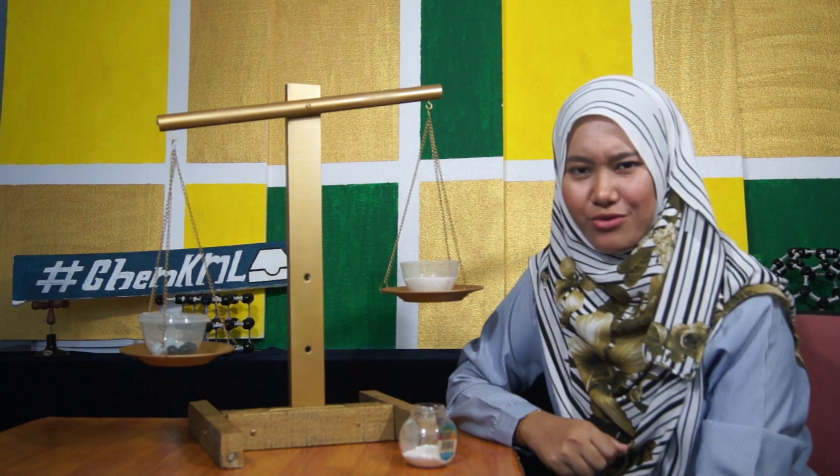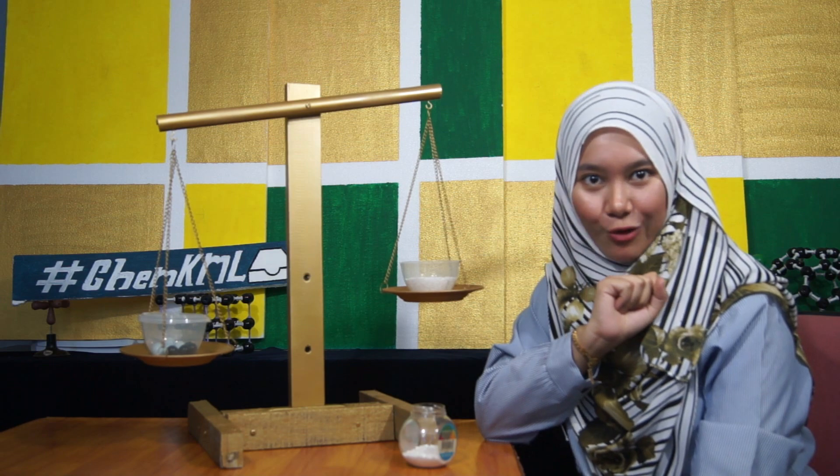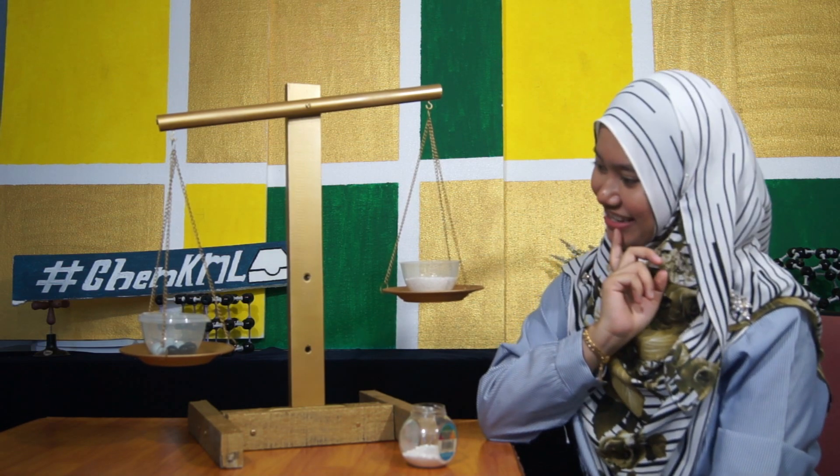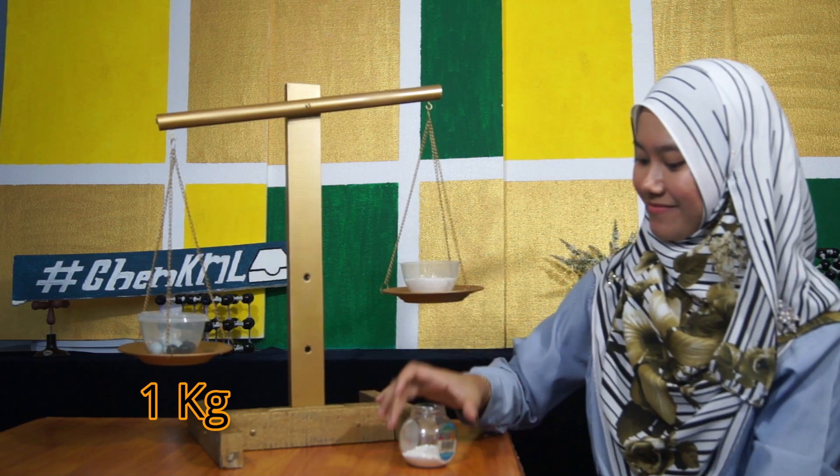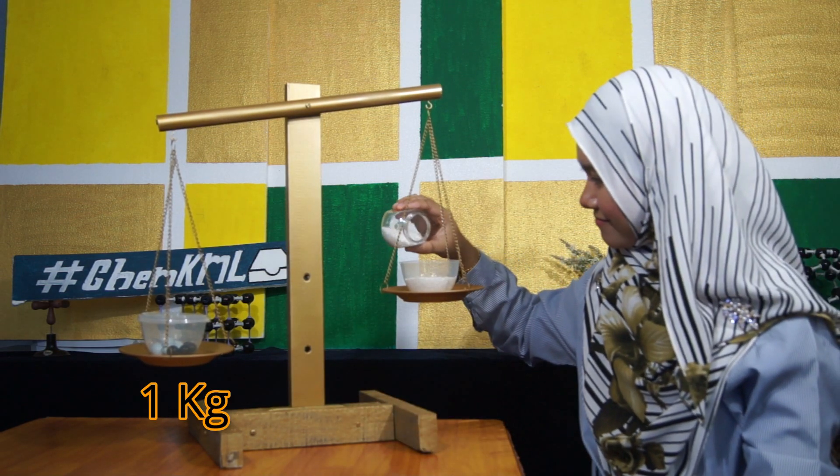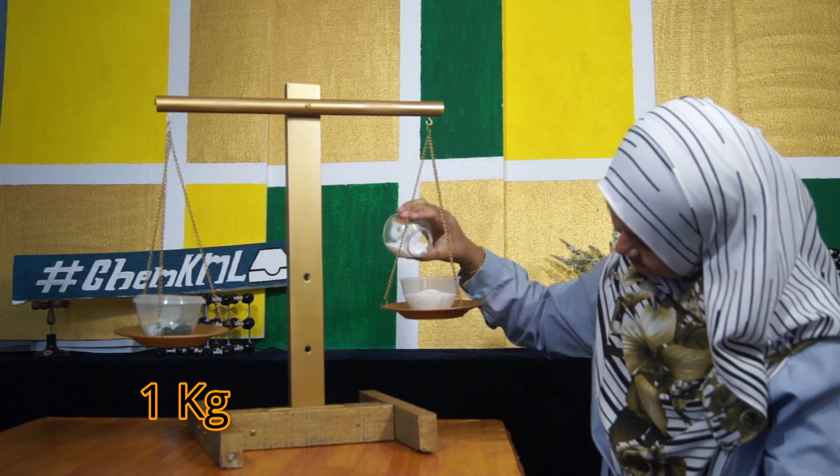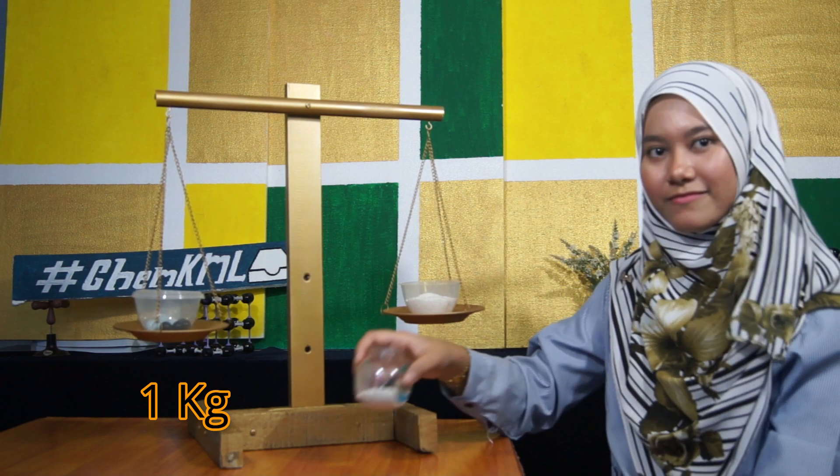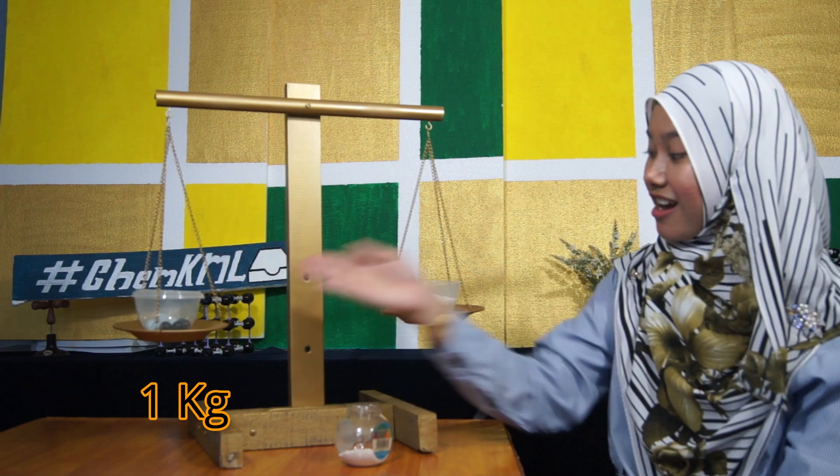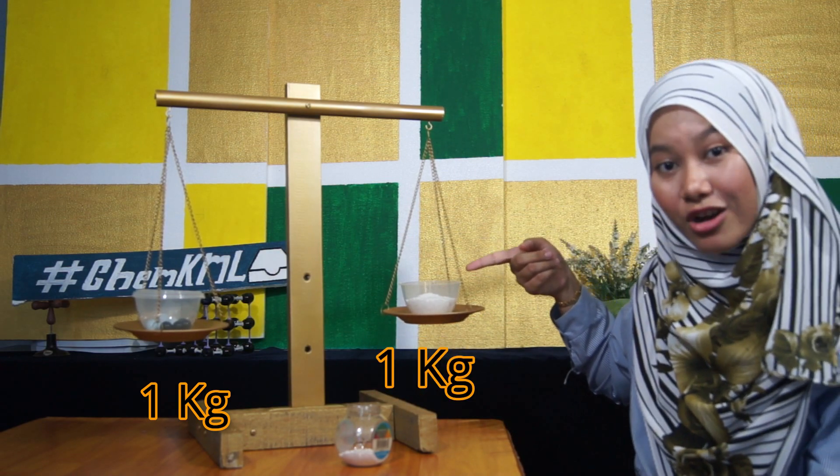I have a question for you. How do I measure 1kg of sagu? Well, let's see. This is a 1kg stone. When both sides are in equilibrium, now I have 1kg of sagu.